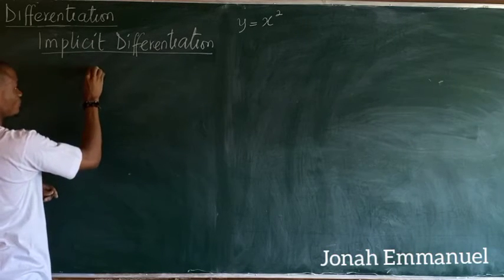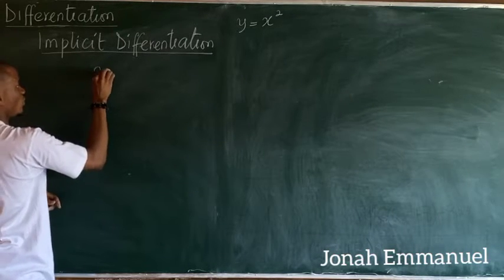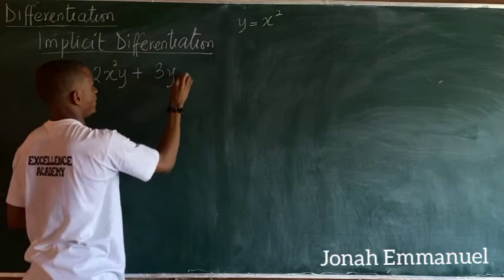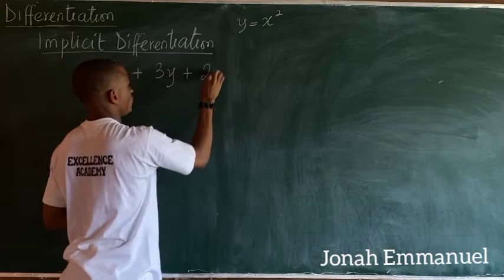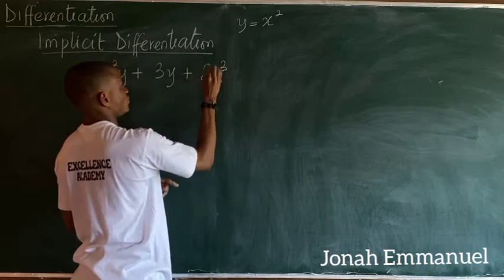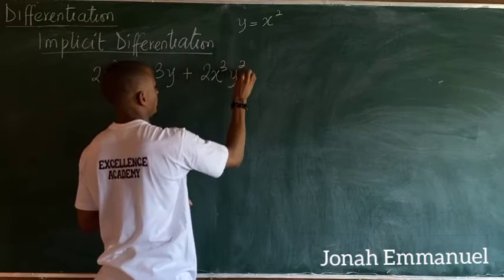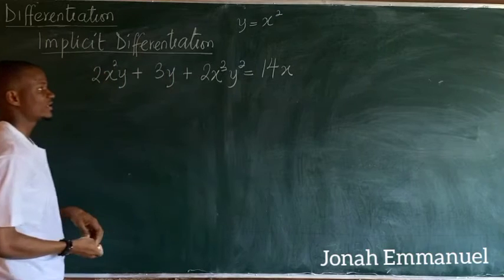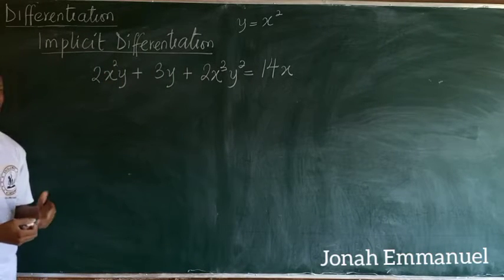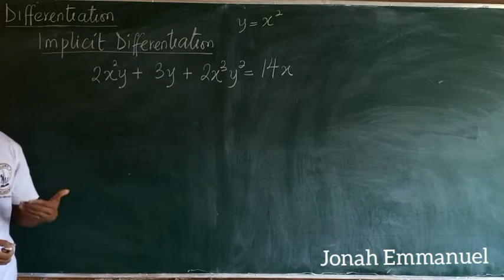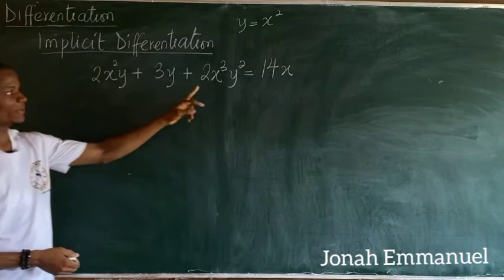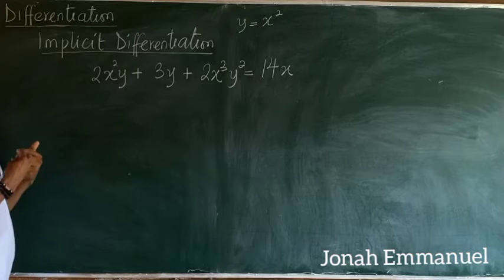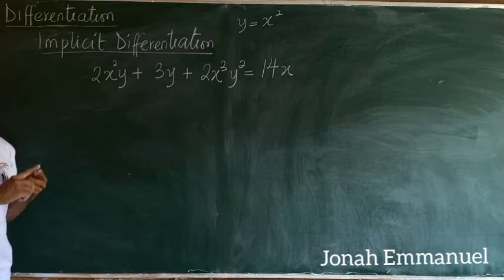For example, let's say I have 2x²y + 3y + 2x³y² = 14x. I'm now going to differentiate this. Observe that this is different from what we've been doing before — X and Y are placed together simultaneously. So how do I solve this using implicit differentiation?